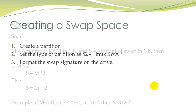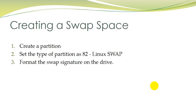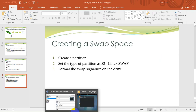Let's start to create the swap space. In order to create swap, we need to create a partition on the hard disk, then set the type of that partition to 82, which is Linux swap, and then format that partition with the swap signature on the drive.